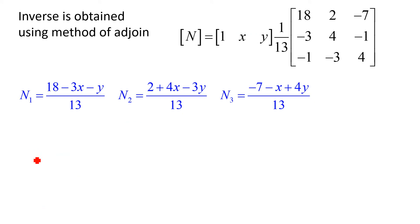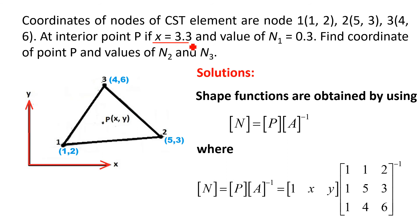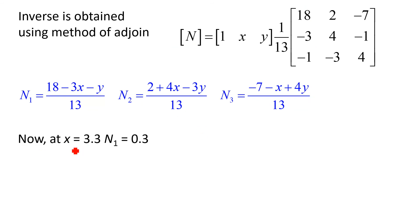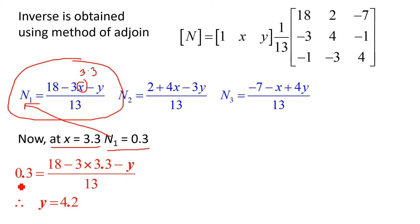Now, looking at the given conditions: X = 3.3 and N1 = 0.3 are given. Substituting N1 = 0.3 and X = 3.3 into the expression for N1, only Y remains unknown. Solving, we get Y = 4.2. So the coordinates of point P are X = 3.3 and Y = 4.2.